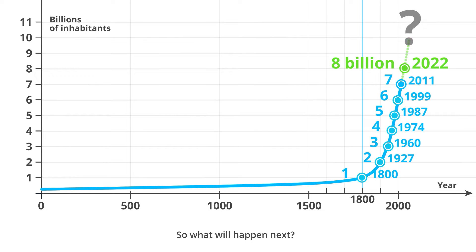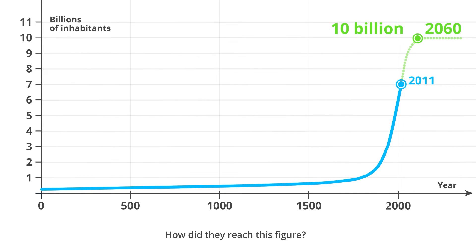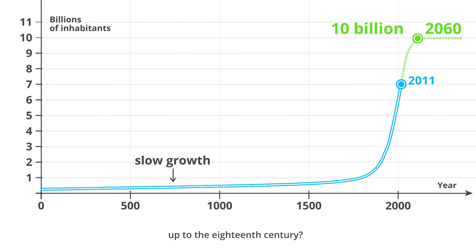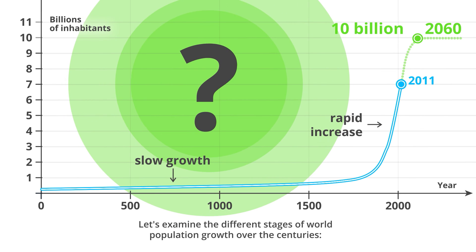So what will happen next? The United Nations are forecasting that the world population will grow to around 10 billion by around 2060, and may level off at around this size. How did they reach this figure? And looking back in history, why did the population grow so slowly up to the 18th century? Why did it start rising so fast from then on? Let's examine the different stages of world population growth over the centuries.